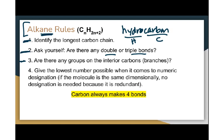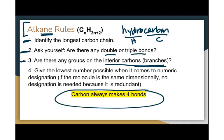Then ask: are there groups on any of those interior carbons? We call those branches. Are there branches coming off of that longest chain? Then we number the molecule, giving these branches or the double or triple bonds the smallest number. The most important thing to remember is that carbons make four bonds — it always has to make four bonds. So we put as many hydrogens on there as we need to make sure that every carbon is making four bonds.